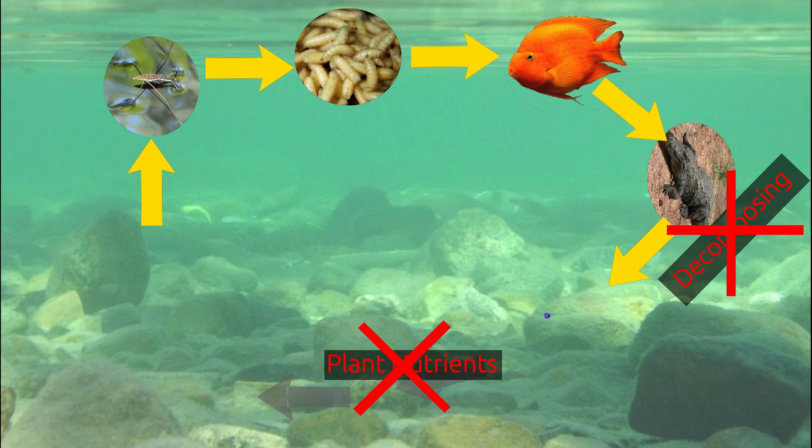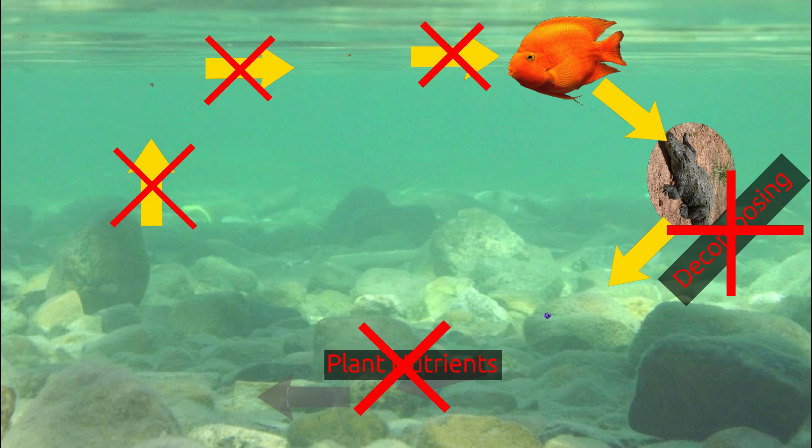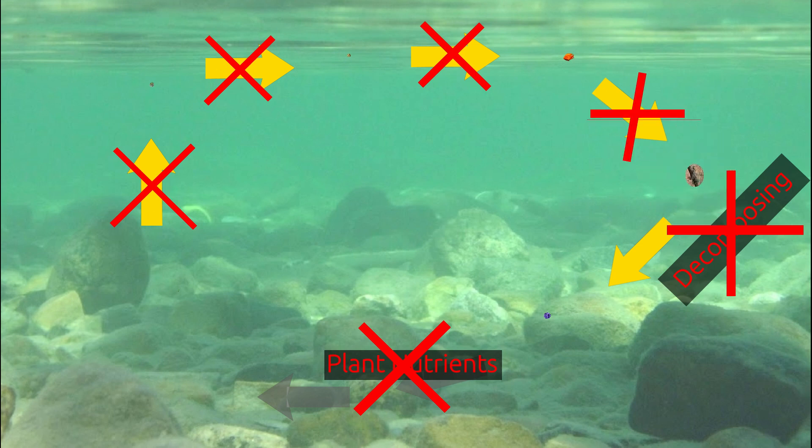This will result in food shortage for insects and the number of insects will reduce. As insects decrease, so does the food of larva, hence population of larva will also decrease. As larvae are food of fish, fish will also start dying and crocodiles will become extinct.